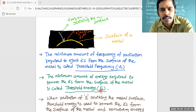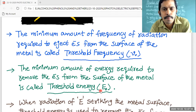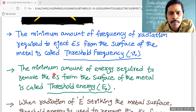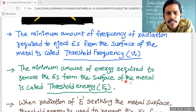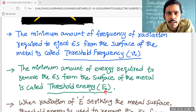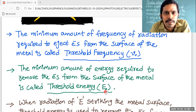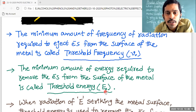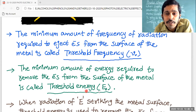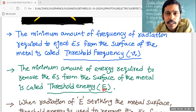Threshold energy is indicated with E₀. Since work is a form of energy, instead of writing E₀ we can also use W₀. The symbol of work is W, so instead of writing E₀ we can also write W₀ to indicate threshold energy. W₀ indicates work function.